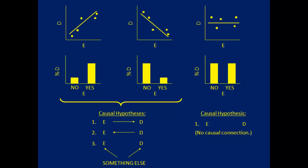One thing to note: when looking at a continuous outcome in the top row, we've used a continuous exposure variable as well. And when looking at a binary outcome in the bottom row, we used a binary exposure. I don't want to give the impression that it has to be this way — the disease and exposure variables don't both have to be continuous or both binary.